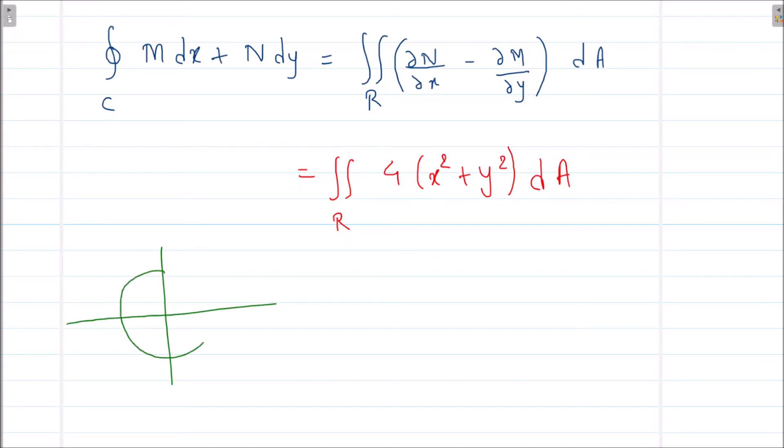So whenever we have circular type of thing, we always prefer polar coordinates. Okay, so we will find the limits of r and θ. Our x is r cos θ, y is r sin θ. So x² + y² will become r². dA is r dr dθ.